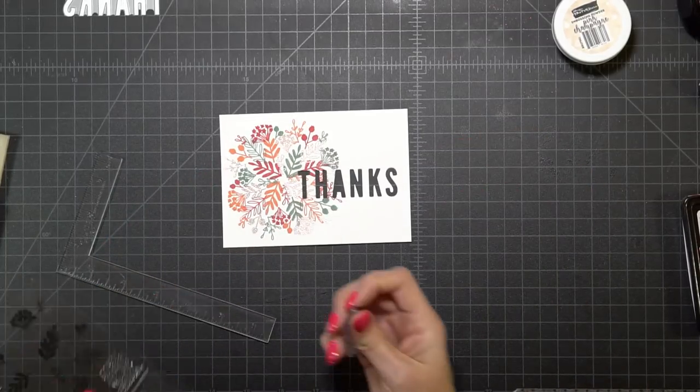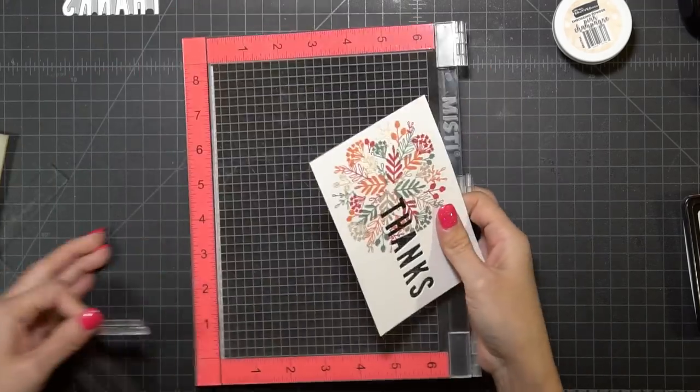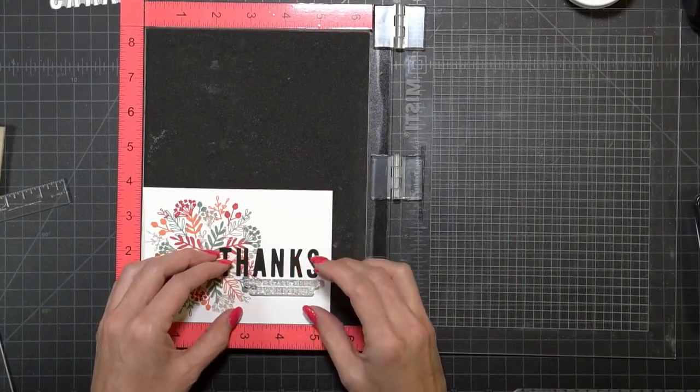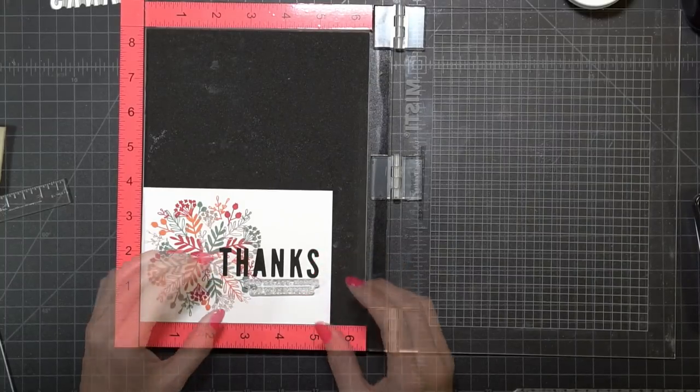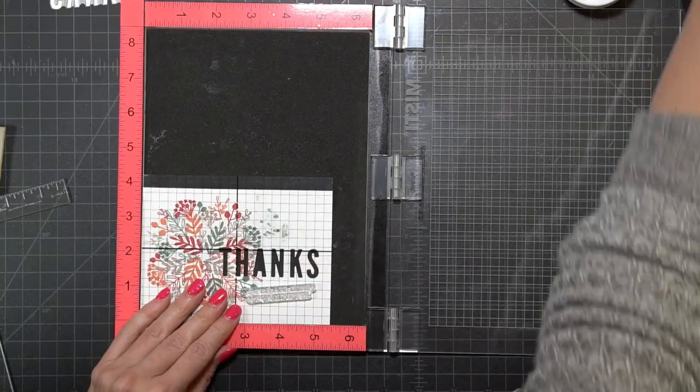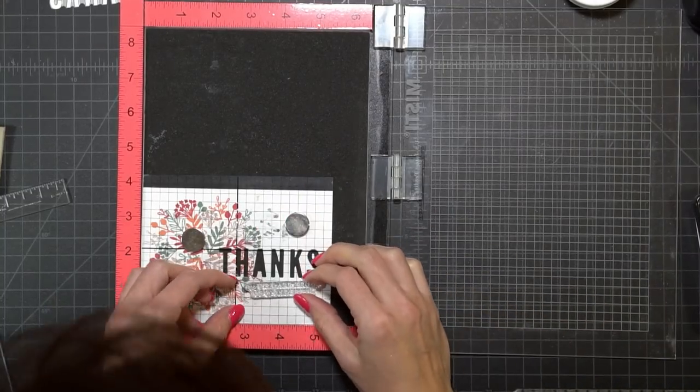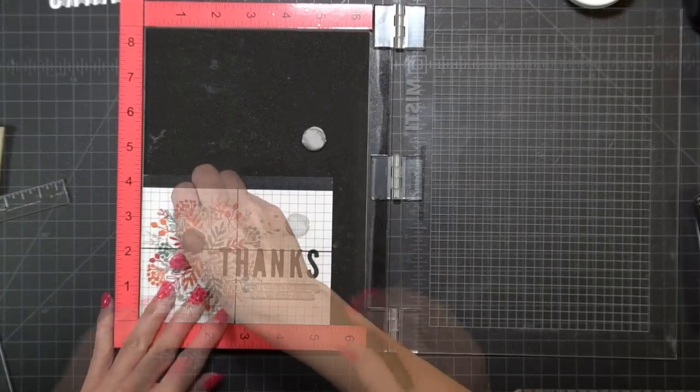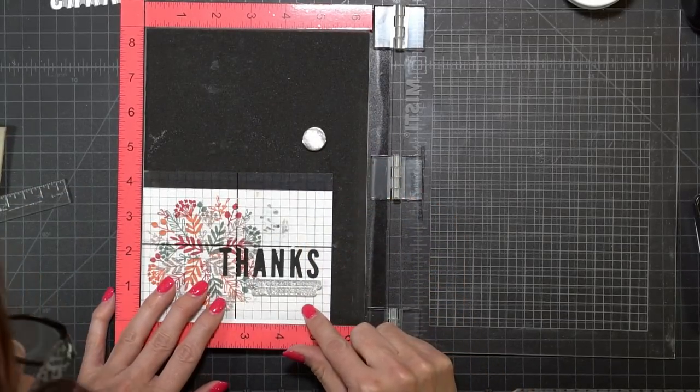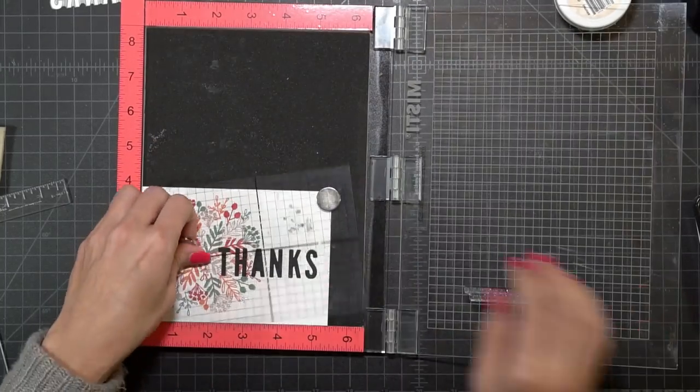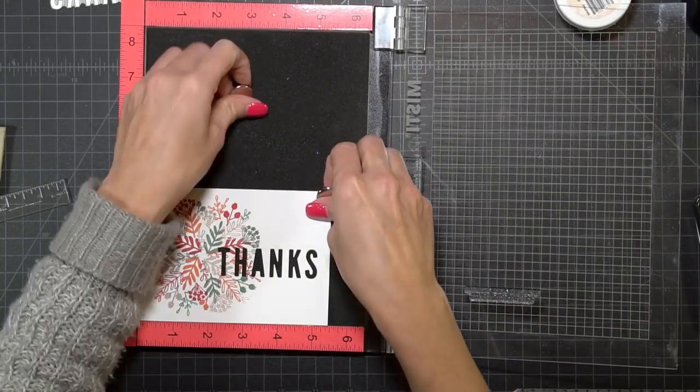I do want to stamp a sentiment just below the thanks, so I'm going to pull out another MISTI because I don't like to unmount any of my stamps until I'm completely done, just in case I want to go back and make multiples. I'm going to use my acetate grid sheet and line up my sentiment. This grid sheet is available free for download on my website.